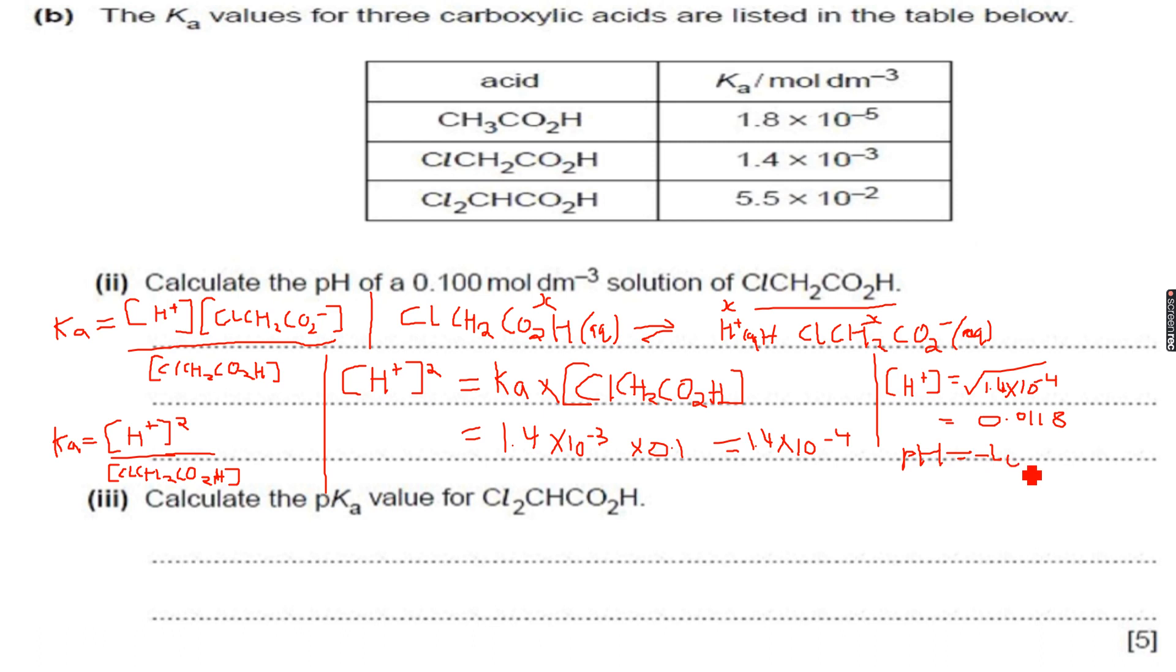It turns out to be 0.0118 from my calculator. Then when I calculate pH, it will be negative log 10 of 0.0118, because that is the concentration of H plus ions, which turns out to be around 1.93 from my calculator. So this is the pH of 0.1 mol per dm cubed of 2-chloroethanoic acid. This is how we can calculate the pH using the concentration and Ka value.